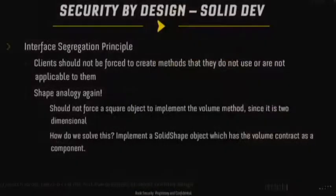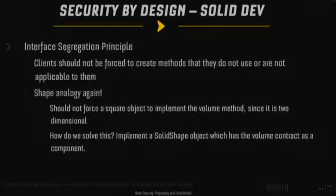Interface segregation: clients should not be forced to create methods they don't use. We see this in front-end development — if you're using a login method, some frameworks make you follow steps that aren't necessary just to display a web portal, rather than allowing you to segment a login page from a table of contents. You shouldn't force an object to implement unnecessary methods. The shape analogy: if we have a square object, we shouldn't force it to have a volume method, because it's a 2D shape — there's no concept of volume. Implementing a solid shape object with volume as an optional contract on a separate interface makes more sense.